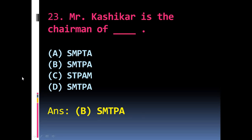Question 23: Mr. Kashikar is the chairman of which organization in the play? The options are A) SMPTA, B) SMTPA, C) STPAM, D) SMTPA. The right answer is B) SMTPA.